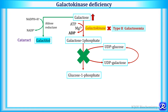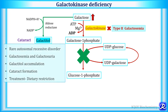Due to accumulation of galactitol in the lens, cataract develops — galactitol is an osmotically active substance that draws water into the lens, causing swelling and degeneration, resulting in cataract. This is a rare autosomal recessive disorder. The manifestations are not severe because there is no accumulation of galactose 1-phosphate. This condition can be treated with dietary restriction of lactose and galactose.